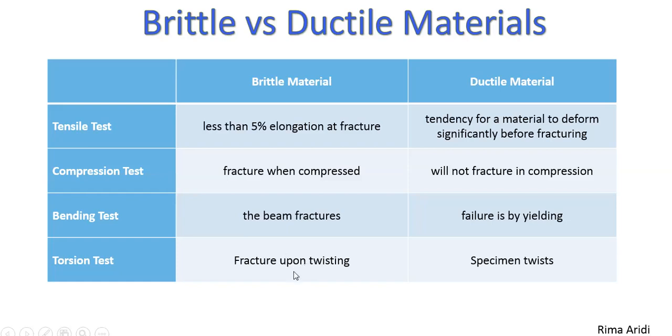Now, torsion tests. The fracture occurs here upon twisting. And in ductile material, the specimen twists.